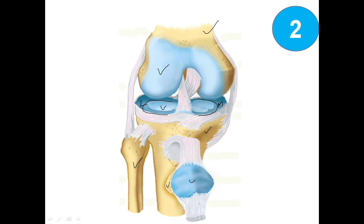Now let's look at the ligaments. Starting from the middle, this is the anterior cruciate ligament and this is the posterior cruciate ligament. On the medial side, this is the medial collateral ligament, which is also known as the tibial collateral ligament.